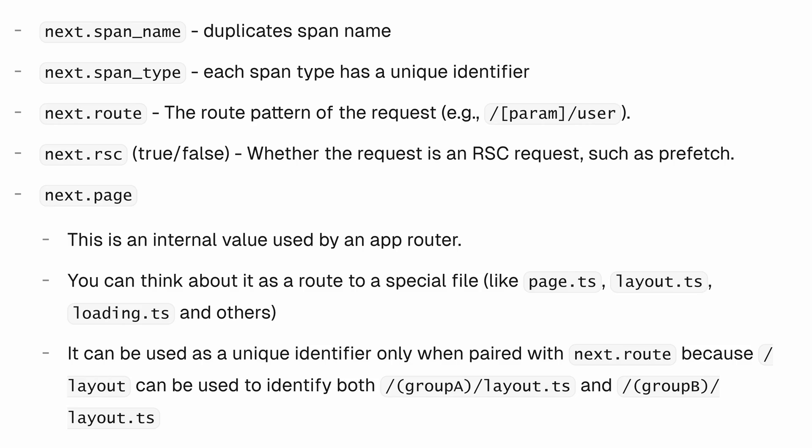Within those spans, we're going to have some default data that gets attached to them. That data might be the span type, the route, the page — which might be a meta file like a layout.ts file. That meta file is only useful once we combine it with the route that it was rendered with, so that we can know the layout.ts might take longer for a specific route than it does for others. That's worth understanding and knowing. And there's even a bit of metadata of whether this page was served with RSCs or not.